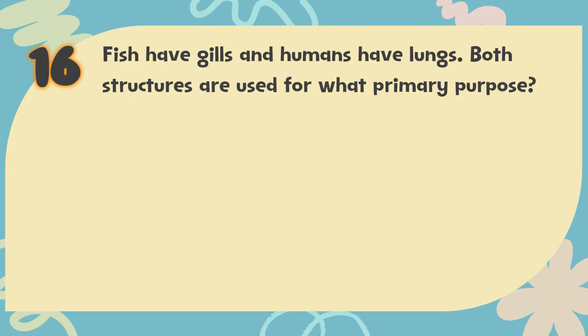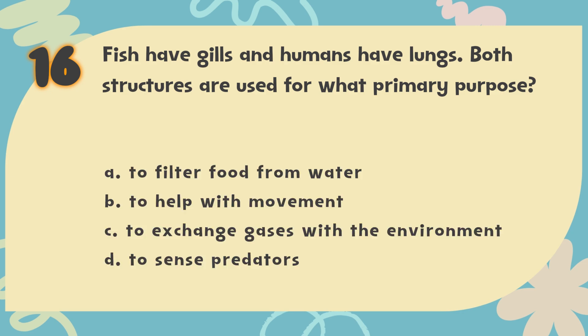Number 16. Fish have gills and humans have lungs. Both structures are used for what primary purpose? The choices are: A. To filter food from water, B. To help with movement, C. To exchange gases with the environment, D. To sense predators.